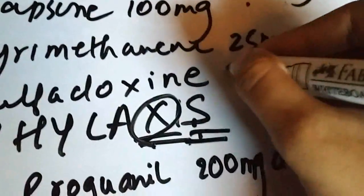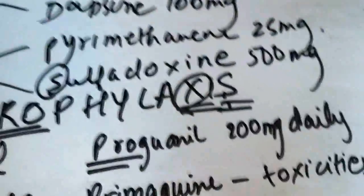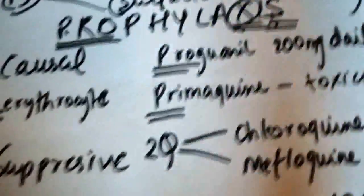Sulfadoxine is given 500 milligrams. So that is all, just a quick review.